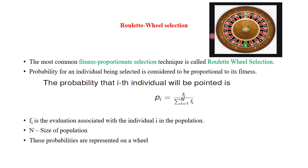A Roulette wheel looks like a wheel you might see in casinos in movies, where players bet on numbers and predict the position of a ball before each spin. The winner is the one who gets exactly the same position of the ball after spinning. This same concept is adopted here to select parents from a population. The most common fitness proportionate selection technique is called Roulette wheel selection, where individuals are selected according to their fitness value and the probability of an individual being selected is proportional to its fitness.